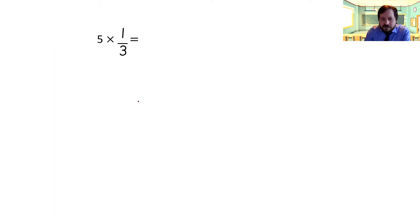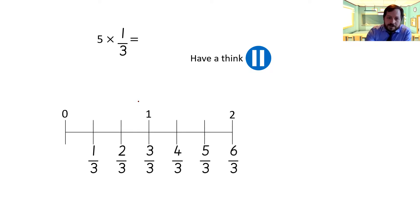So five times one-third equals, have a think, what do you think? There's another way to show it. If we think about this, we've got five times one-third, so it's one, two, three, four, five, five-thirds, which is there. Then we can change that into a mixed number if we want to, which is one and two-thirds, but we could do that anyway. Or we could do five times one, which is five-thirds.